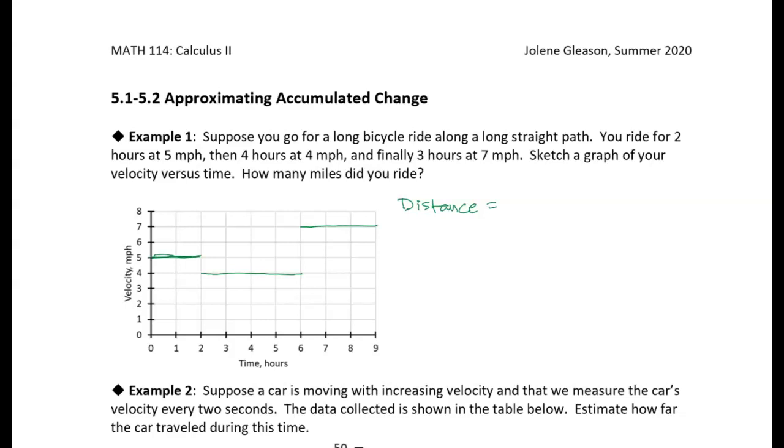We rode for two hours at five miles per hour, so that's five miles per hour times two hours. For that segment, I can figure out how far I rode just by taking five times two. And then I'm going to add to that—I went for four hours at four miles per hour.